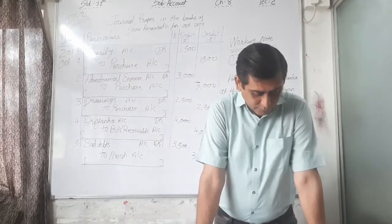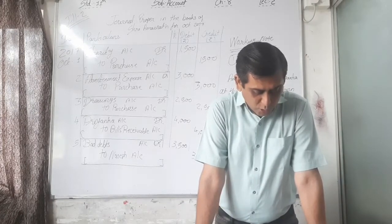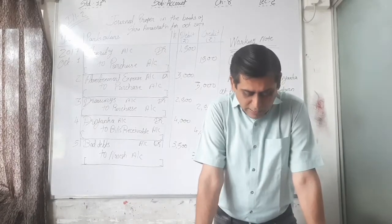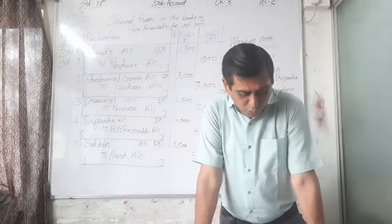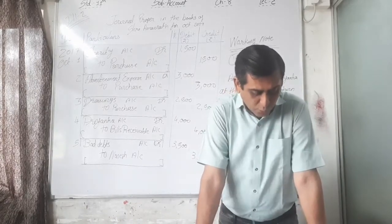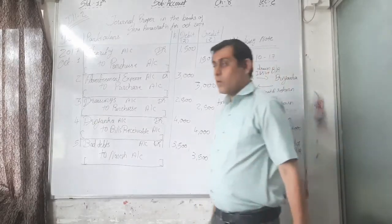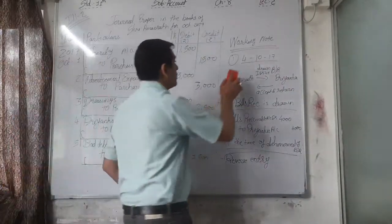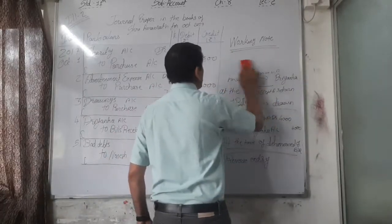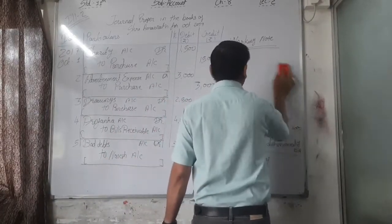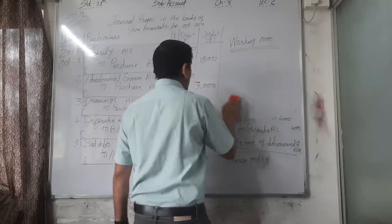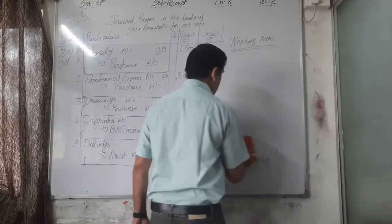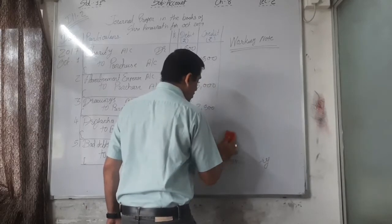Sixth transaction, October 6th: a bill of rupees 2,000 endorsed in favor of Pankaj against a debt of rupees 2,050. There are two entries here; this is a linked transaction, not a single transaction. Working note: Amarna has to pay rupees 2,050 to Pankaj — so Pankaj is Amarna's creditor. Amarna also holds a bills receivable of rupees 2,000 drawn on someone, say X.